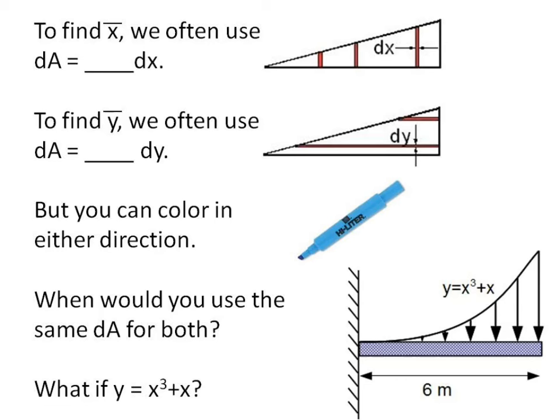To find x bar, we often use a vertical rectangle. To find y bar, we often use a horizontal rectangle. But you can color a shape in any direction you'd like. Can I use the same dA for both of my integrals? That's going to be really nice if I have something that looks like y equals x cubed plus x, because trying to figure that out for a horizontal integral and solve x equals some function of y is not going to be easy.